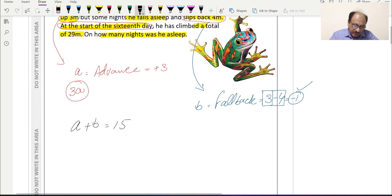So we can write a plus b equals 15. The second equation we can form: 3a minus b equals 29. They are saying the final total climb distance is 29 meters.